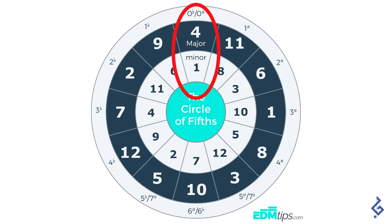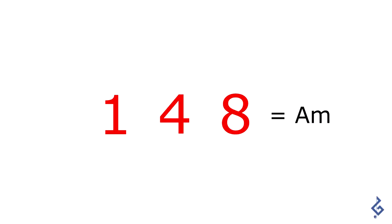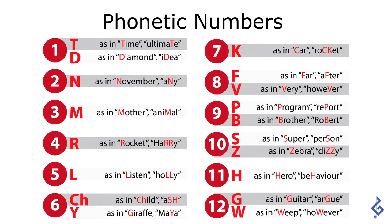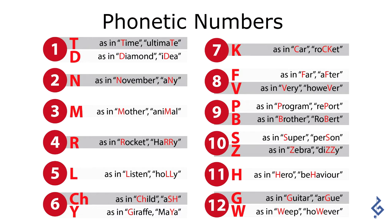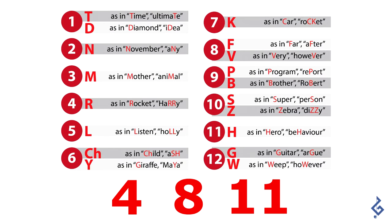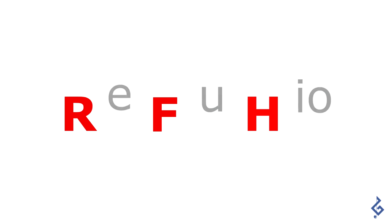I also wanted to remember which note was part of which chord — which notes become A minor, C minor, G flat minor. So I ended up using something called phonetic numbers, where you relate a sound to each number. I made a list from 1 to 12 and assigned a consonant: 1 would be T or D, 2 would be the N sound, 3 would be M, and so forth. For example, C major — the most common chord — is C, E, and G, which in my system is 4, 8, and 11. Using this notation, 4 becomes R, 8 becomes F, and 11 becomes the H sound. Because I'm a Spanish speaker, I created the word 'Refugio' — a shelter.